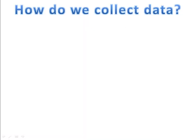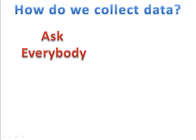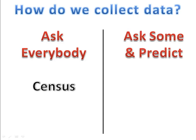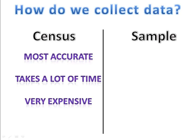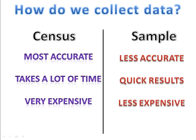When it comes to statistics, your information is really what drives your accuracy. How do we collect good information? We have a couple of options: we could ask everybody — a process known as taking a census — or we could ask some people and predict what everybody would say based on those answers, which we call taking a sample. A census, while accurate, is very expensive and takes a lot of time. A sample, while less accurate, gives much quicker results and is much less expensive to conduct.